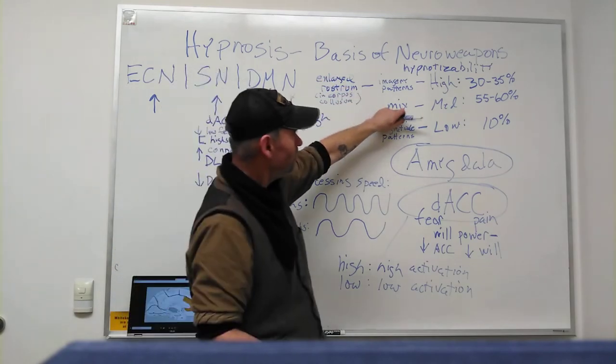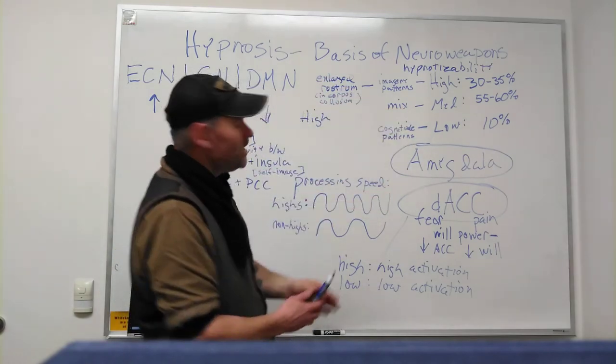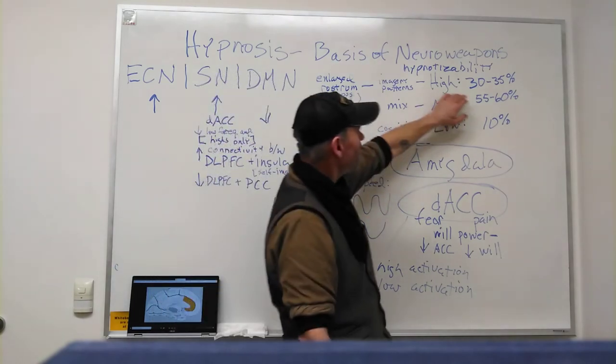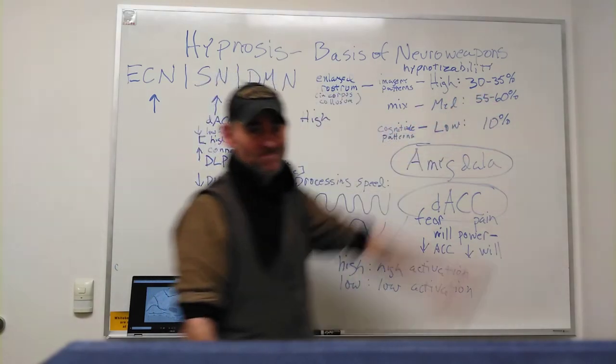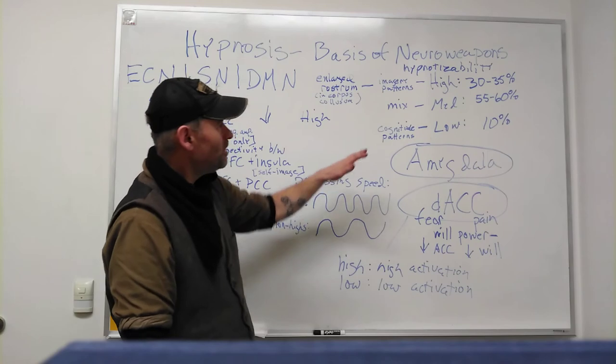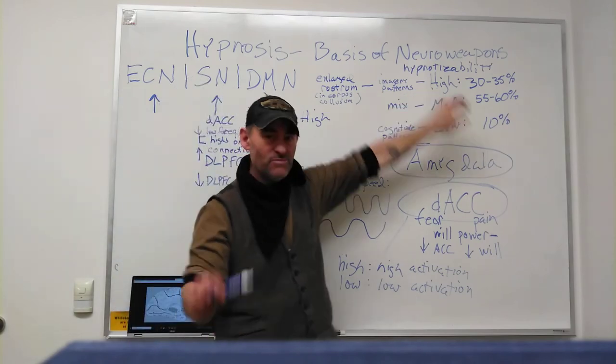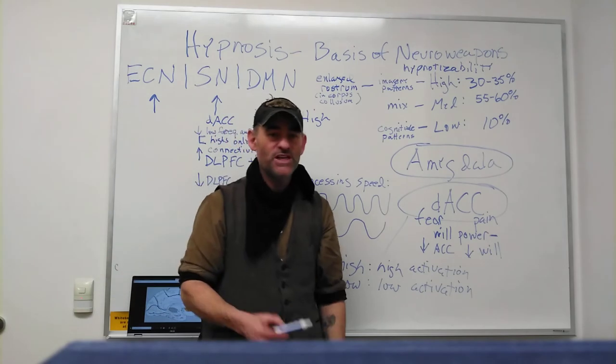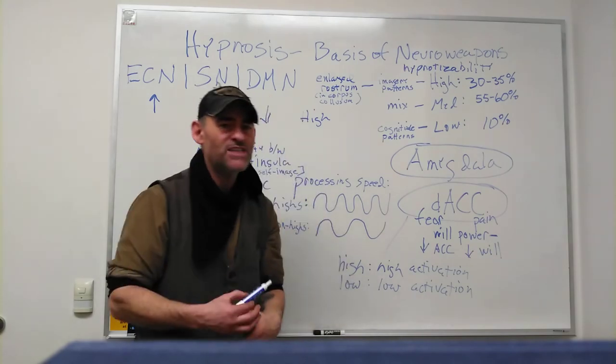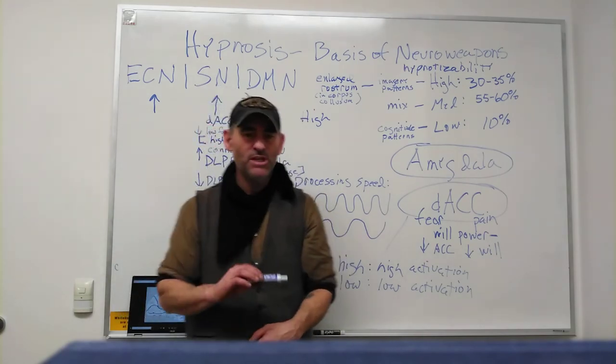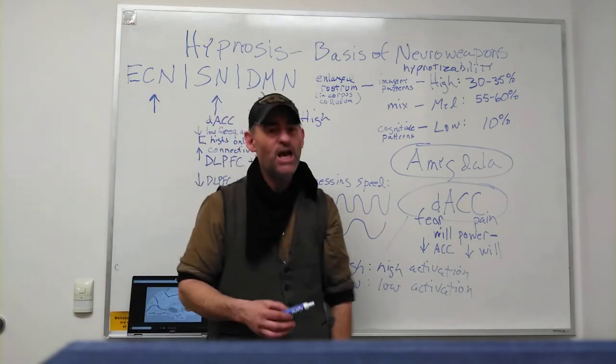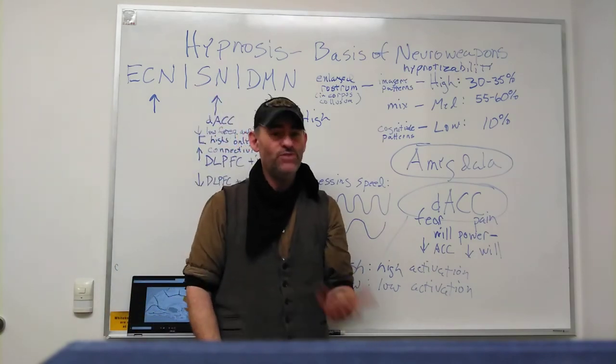One of the things about these highly hypnotizable, medium hypnotizable, and low hypnotizable people is there is a physical differentiation. First we will look at the population dispersion. Highly hypnotizable people comprise 30 to 35 percent of the population in any given population across the world. This is one-third of the population that can be hypnotized very deeply and they will do whatever you say.